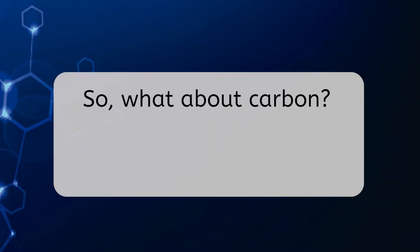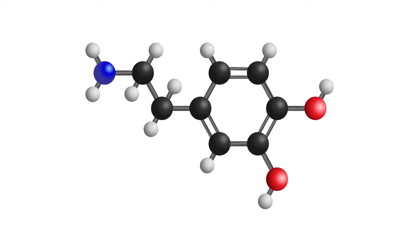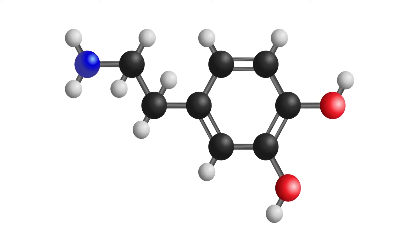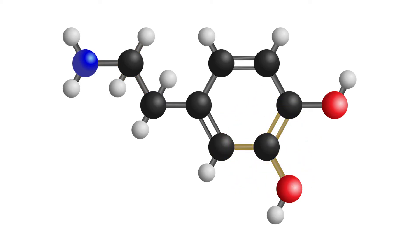So what about carbon? How many electron pairs do carbon atoms like to share? Take a look at this dopamine molecule and see if you notice a pattern across all the carbon atoms — remember that carbon atoms are represented as black. Each carbon atom in this molecule is participating in four shared electron pairs. Some carbons form four single bonds; others form a double bond and two single bonds. But every carbon is involved in four shared electron pairs. Carbon's ability to participate in four shared electron pairs makes it a very versatile building block.